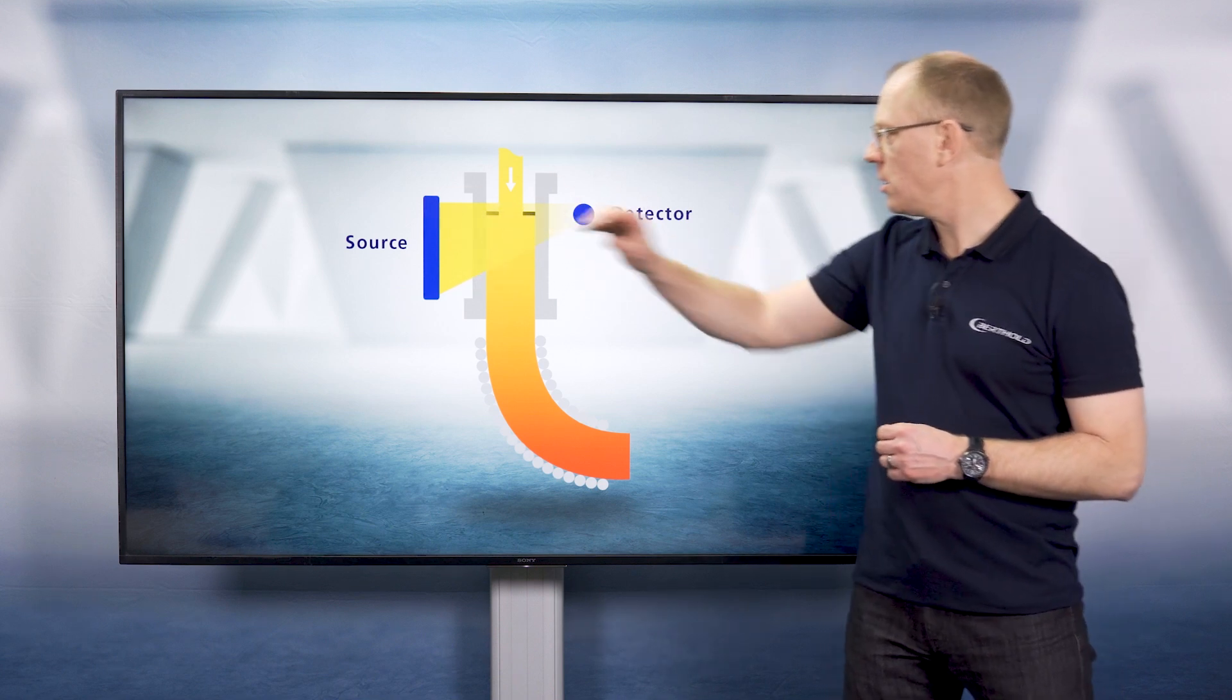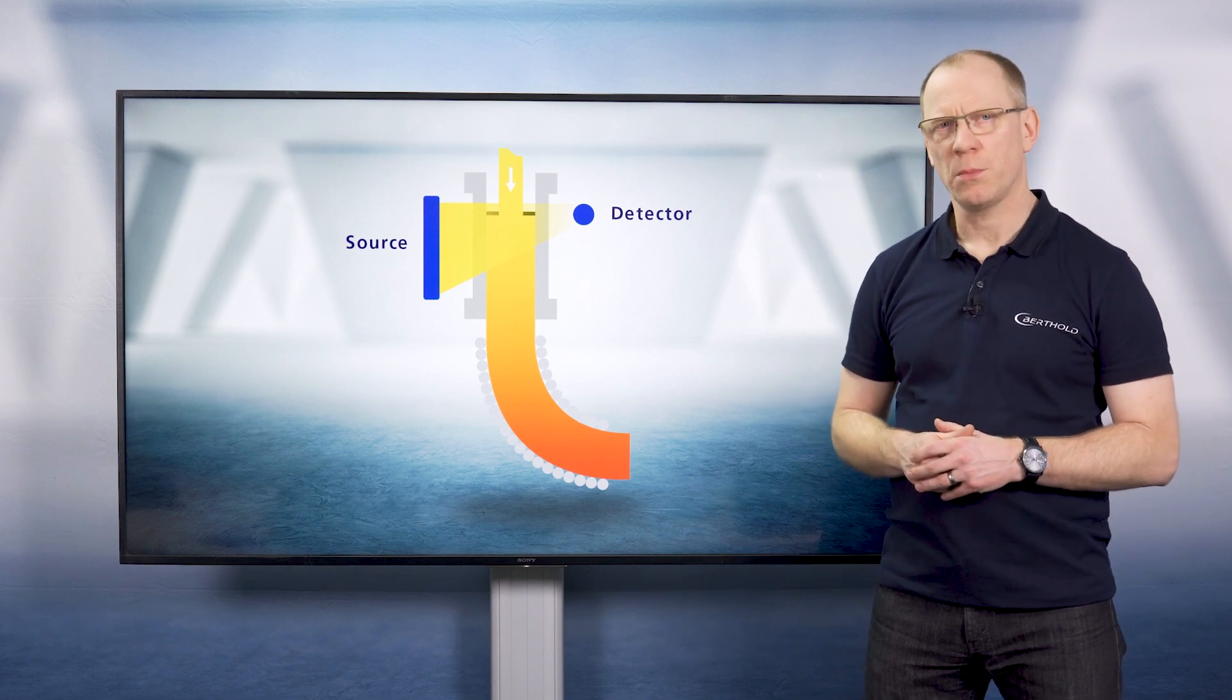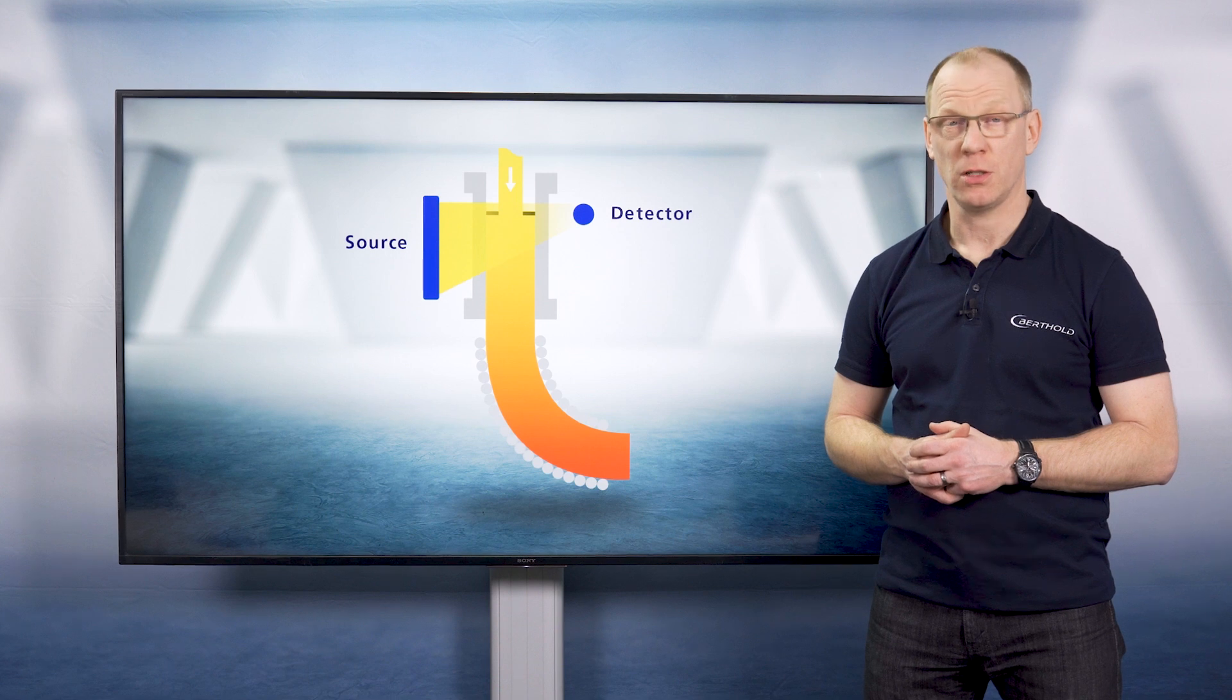With the source on one side and the detector on the other side. With this setup, you can measure the powder and the steel level at the same time continuously.